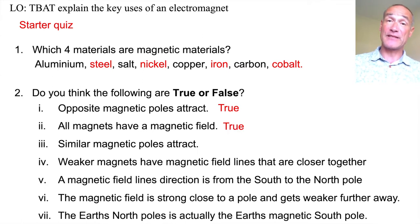Similar magnetic poles attract is false. That means north-north and south-south, they repel. Weaker magnets have magnetic field lines that are closer together. No, it's stronger magnetic fields.